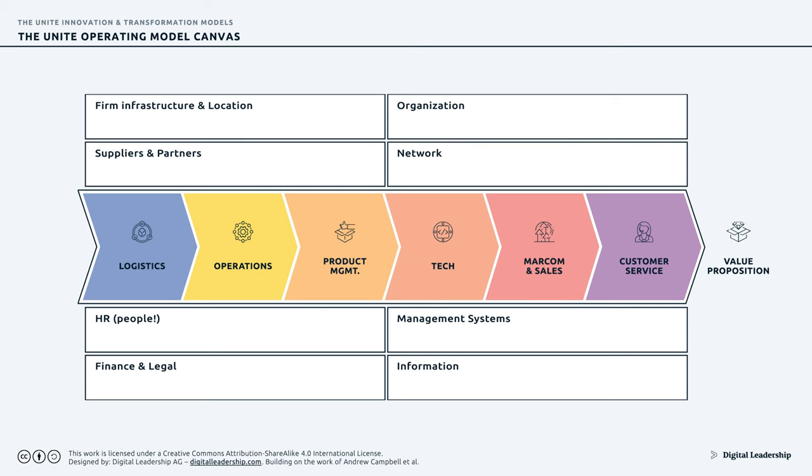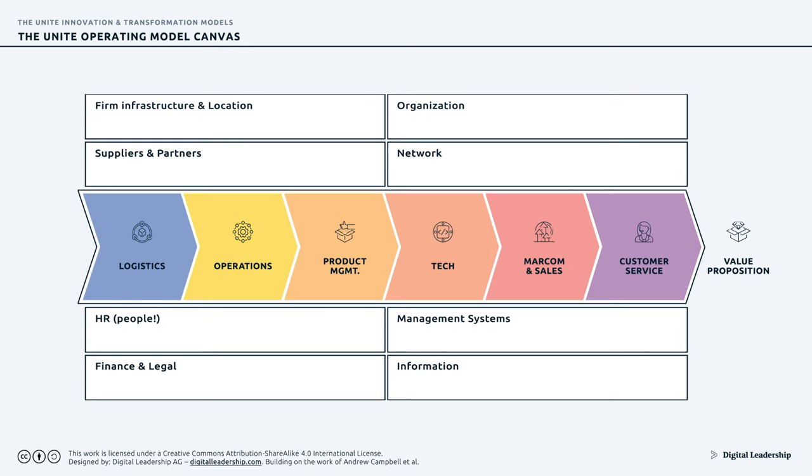The central value delivery chains describe how the value proposition is delivered to your target customer. These core processes directly deliver value to your customers. Note that you may delineate several value delivery chains if you have more than one — a business is not necessarily limited to just one value chain. In fact, many businesses have several key value chains. The other areas depicted in white are the supporting processes, which are necessary but focus on internal customers and processes as opposed to external ones.